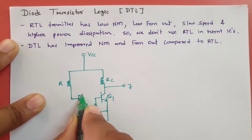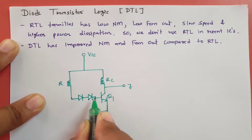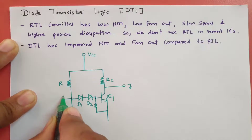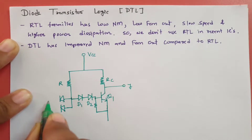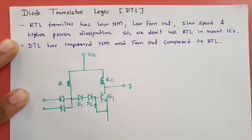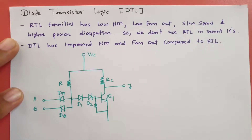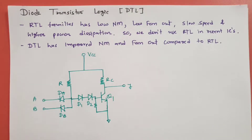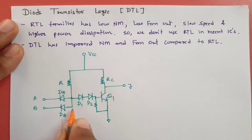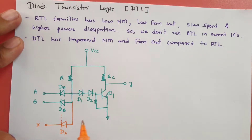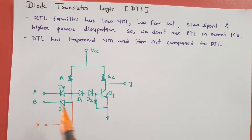Connected to Q1 is one more biasing resistor, and then two biasing diodes — D1 and D2. Here we also have input diodes: DA connected to input A and DB connected to input B, with one end connected to ground. To increase the number of inputs, further connections can be made — for example, input X with diode DX. For functioning purposes, we will consider just these two inputs. This completes the DTL NAND gate circuit.